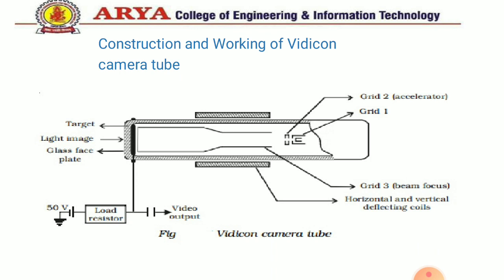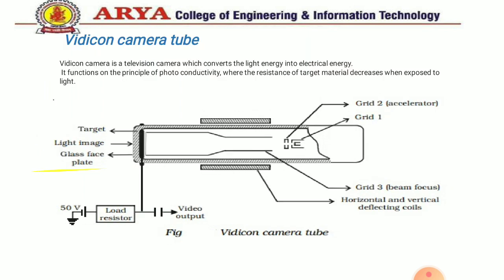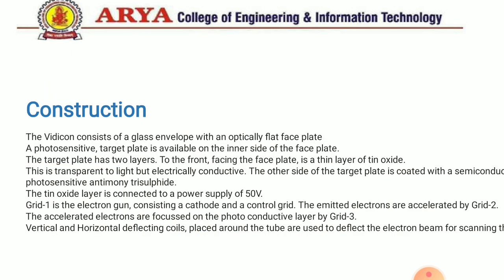The Vidicon is a short tube with a length of 12 to 20 centimeters and a diameter between 1.5 to 4 centimeters. The resistance of the surface changes between 2 megaohm to 20 megaohm from bright to dark spots. For a bright spot the resistance is 2 megaohm, and for a dark spot the resistance is 20 megaohm.